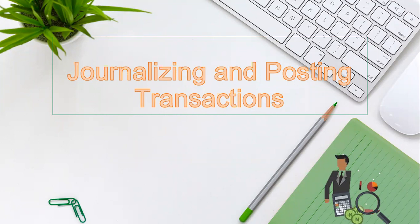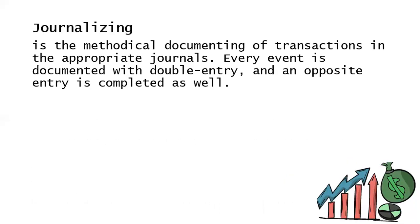First, let's define what journalizing means. Journalizing is the methodical documenting of transactions in the appropriate journals. Every event is documented with double entry and an opposite entry is completed as well. When we say methodical documenting, it should be very organized when you document your transactions for whatever business you have.